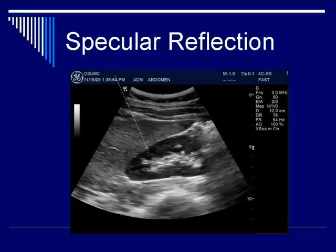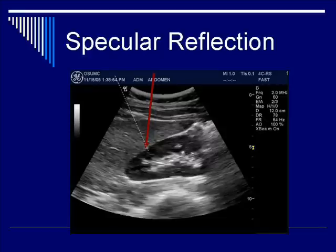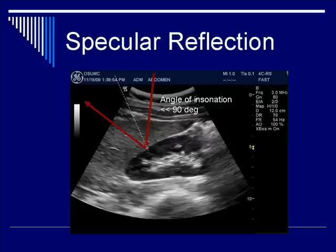On the other hand, if you draw a normal line towards the more hypoechoic region of the superior part of the kidney and draw an incoming ultrasound beam reflecting off of that surface, you see that because the angle of insonation in this case is much less than 85 to 90 degrees — it's probably around 60, 65, 70 degrees — the incoming beam hits the fascia but reflects outside the field of view.